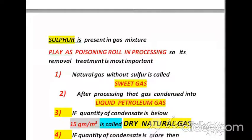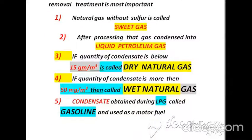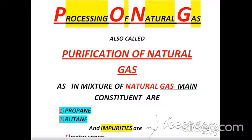Sulfur removal treatment is most important. Natural gas without sulfur is called sweet gas. After processing, that gas condenses into liquid petroleum. If the quantity of condensate is below 15 grams per cubic meter, it is called dry natural gas. If the quantity of condensate is more than 50 milligrams per cubic meter, it is called wet natural gas. Condensate obtained during LPG processing is called gasoline and is used as a motor fuel.